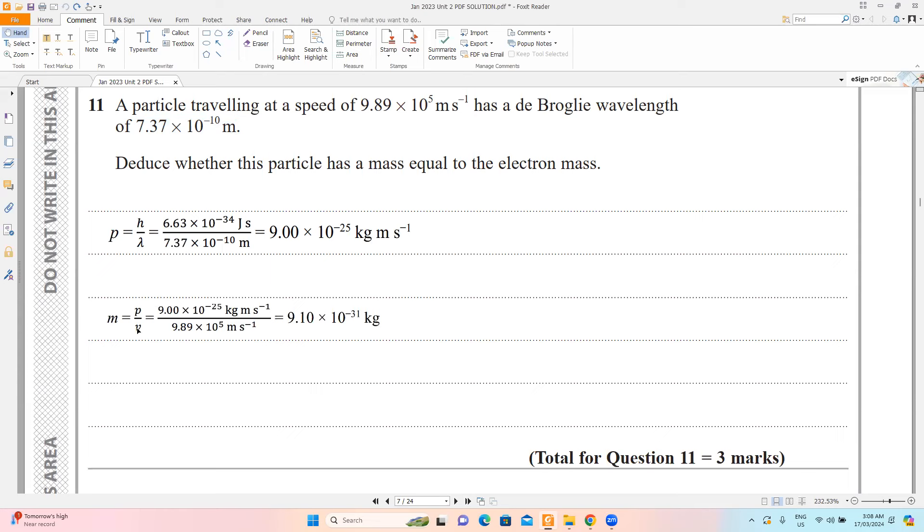So mass will be momentum divided by velocity. I have the momentum from the previous section divided by the velocity.